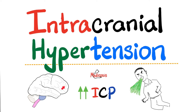In previous videos, we talked about strokes — ischemic and hemorrhagic. We talked about the Glasgow Coma Scale, neurogenic shock and other types of shock, Guillain-Barré syndrome, multiple sclerosis, myasthenia gravis and Lambert-Eaton myasthenic syndrome. We also talked about Duchenne muscular dystrophy and Becker's muscular dystrophy.